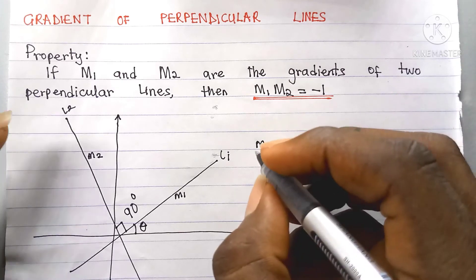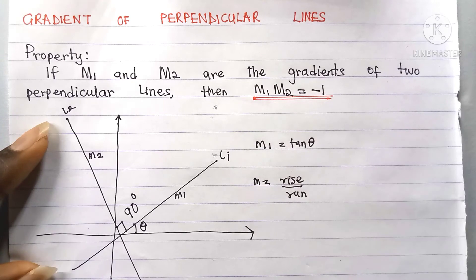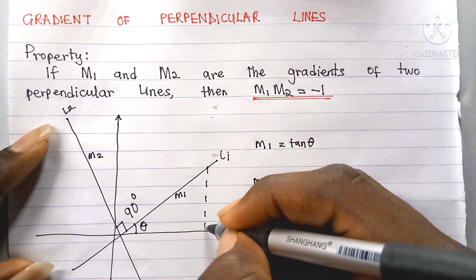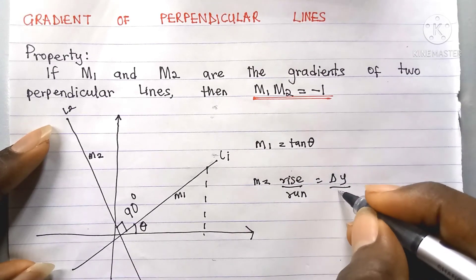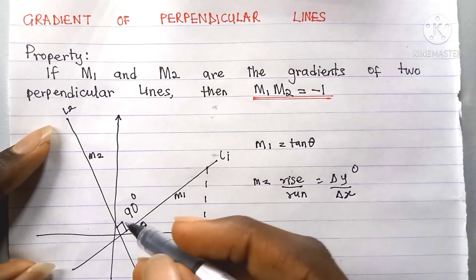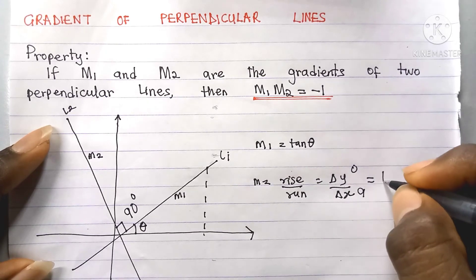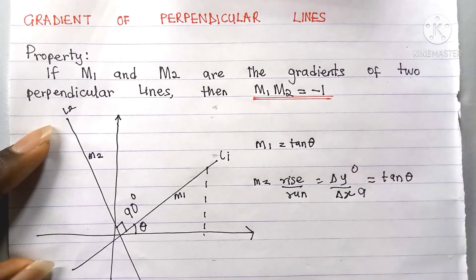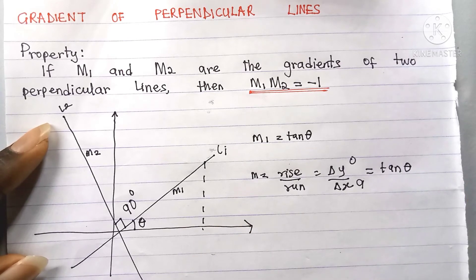Another way to see that m1 equals tan theta is through the gradient formula: m equals rise over run. The rise is the change in y, and the run is the change in x. Change in y is opposite to this angle and change in x is adjacent, so opposite over adjacent is tan theta. That's how we get that m equals tan theta.